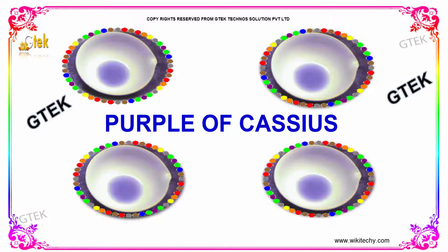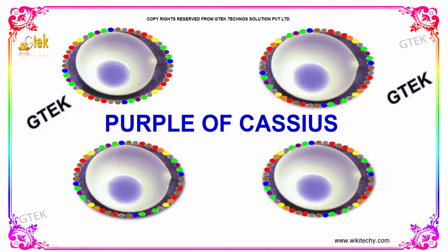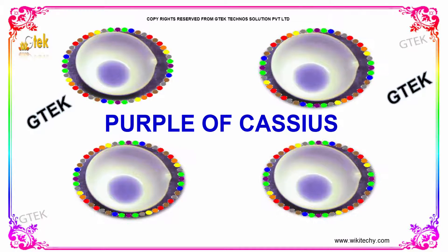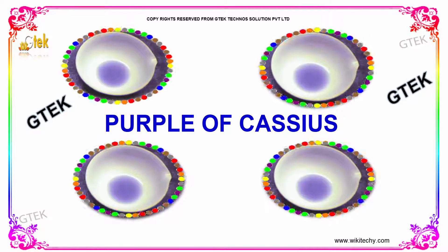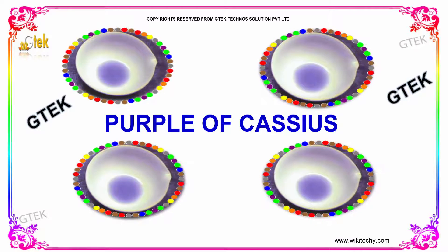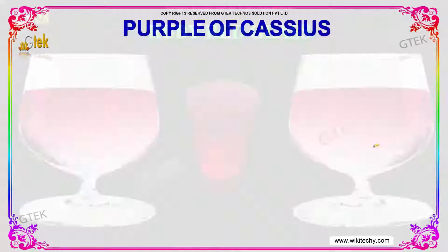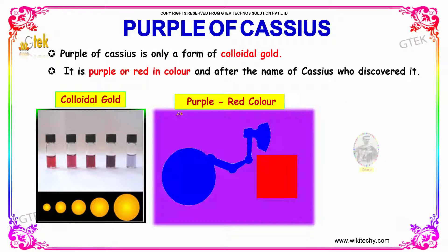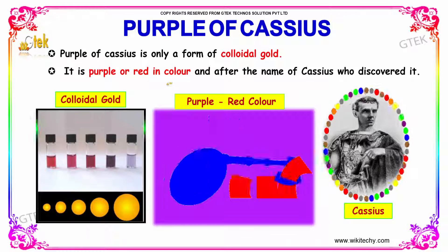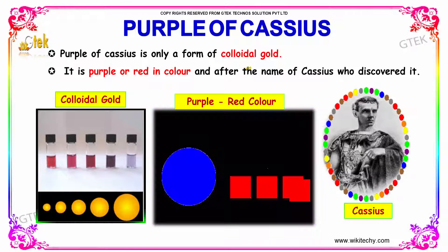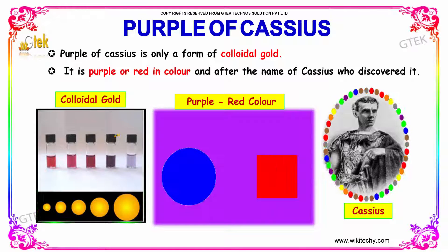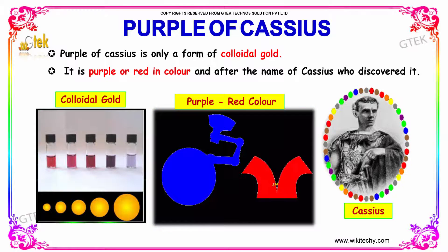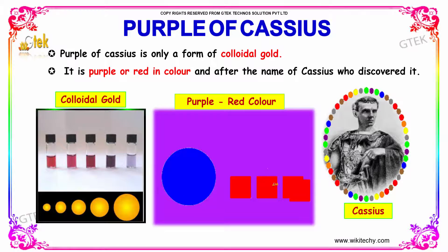This is the final area in the D-block elements, and that's the Purple of Cassius. Purple of Cassius is only a form of colloidal gold. It is purple or red in color, and it is named after Cassius, who discovered it.